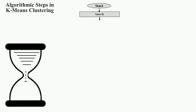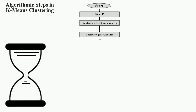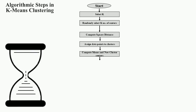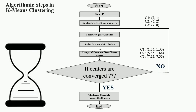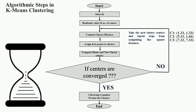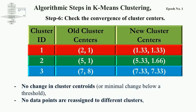To summarize: Step 1 — take the value of K (3 in this example). Step 2 — randomly select K initial cluster centers: (2,1), (5,2), and (7,8). Step 3 — compute the square distance of each data point with cluster centers. Step 4 — assign each data point to a cluster based on minimum square distance. Step 5 — compute the means of cluster data points and generate new cluster centers. Step 6 — check for convergence; if converged, clustering is complete, otherwise take new cluster centers and repeat steps 3 to 6 for the next epoch. At the end of epoch 1, the cluster centers are not converged, so take the new cluster centers and repeat steps 3 to 6 as part of epoch 2.